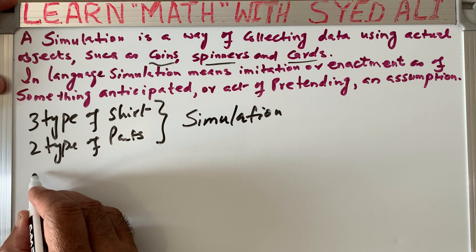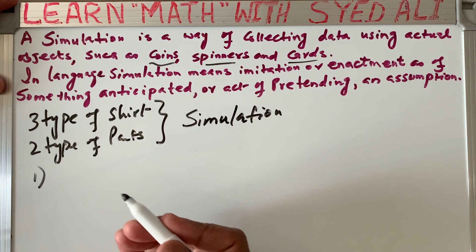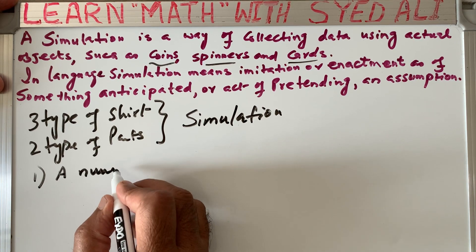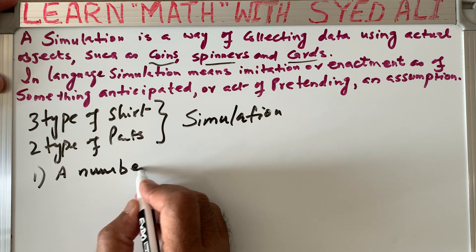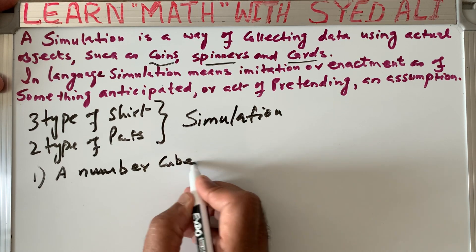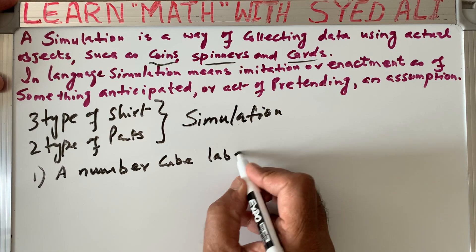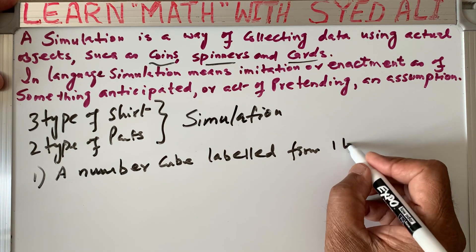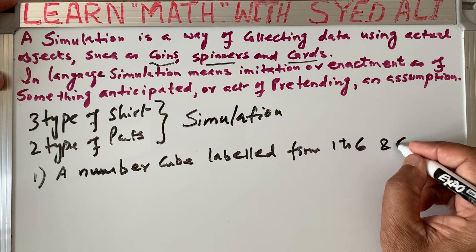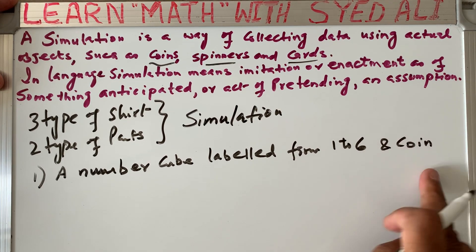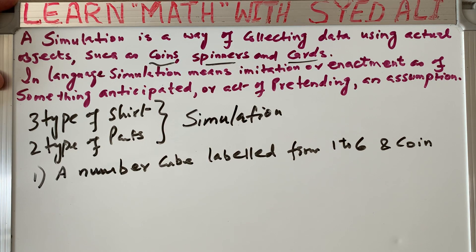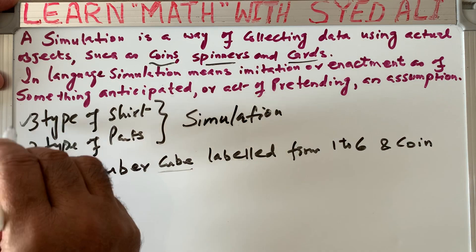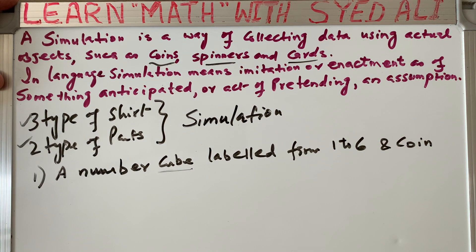We can write down a few statements and choose the correct one. Statement A: a number cube labeled from 1 to 6 and a coin. But the cube has 6 sides and the coin has 2 sides, giving 12 total outcomes. This is not related to our situation, because here we have 3 types of shirts and 2 types of pants, which gives only 6 outcomes.